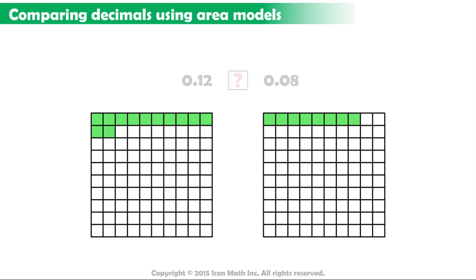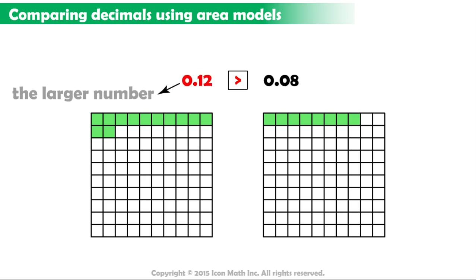Notice that the decimal number twelve hundredths represents more shaded parts than the decimal number eight hundredths. So, the decimal twelve hundredths is greater than eight hundredths, and we use the greater than symbol to state that it is greater.